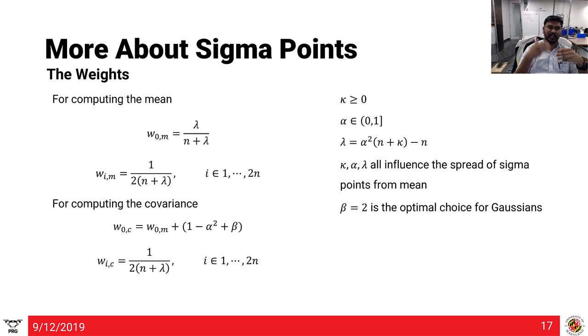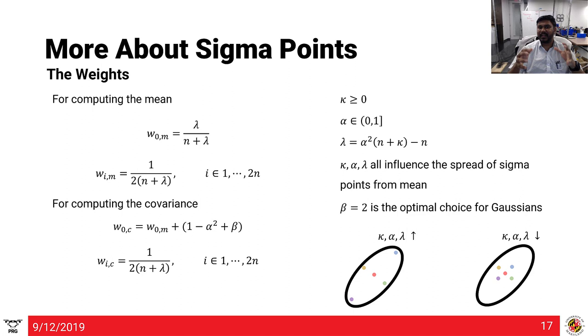Let's continue talking about the weights. The equations for the weight from the Merwe paper are given here. The derivation is beyond the scope of this class. We have a few parameters. Kappa is greater than or equal to 0, alpha belongs to the open set 0 and closed set 1, and lambda is given as follows depending on dimensionality. Kappa, alpha and lambda determine the spread of the sigma points around the mean, and beta is chosen to be 2 which is optimal for Gaussians. If I increase kappa, alpha and lambda, the spread increases; if I drop the values, the spread goes down.